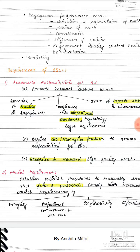The first leadership responsibility is to promote an internal culture where the essence of quality is maintained across all engagements. You need to ensure that whatever assignments your firm takes, quality is provided in all of them — that work is performed as per professional standards and compliant with legal and regulatory requirements. Your firm's internal culture should be such that in every engagement, quality is ensured and professional, regulatory, and legal compliance is maintained.